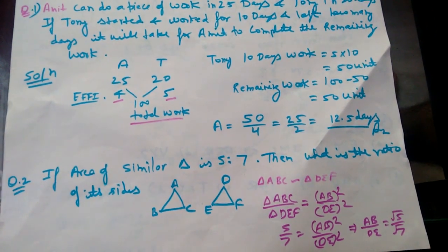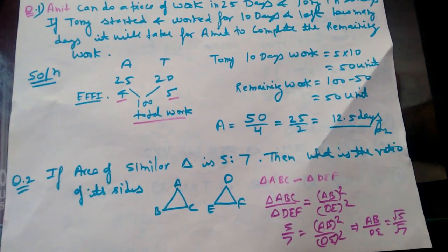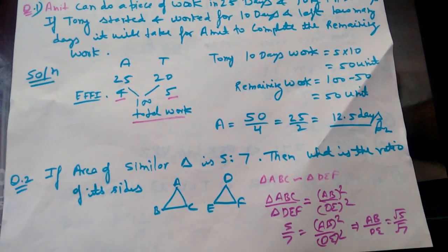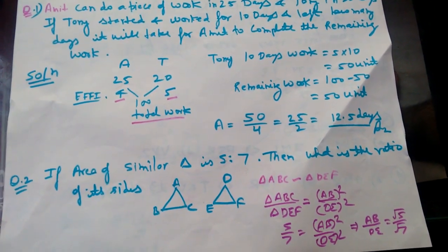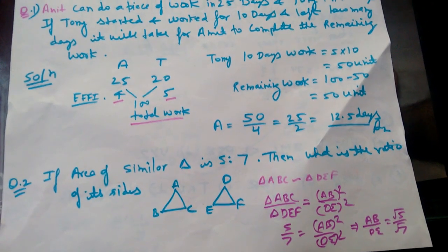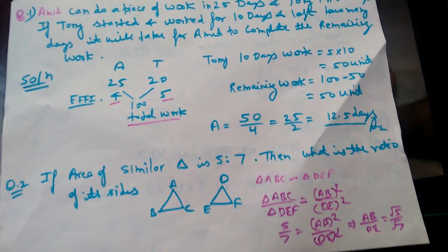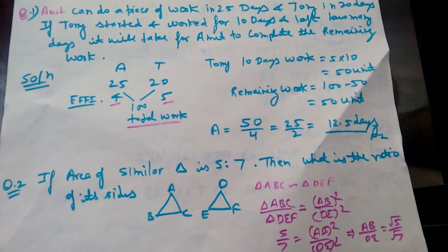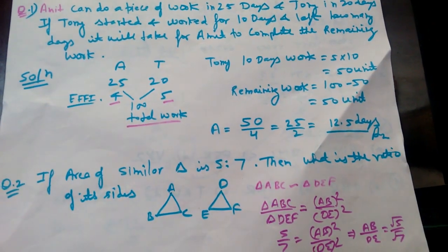how many days will it take for Amit to complete the remaining work? So Amit and Tony worked for 25 and 20, taking LCM. His efficiency was 4 for Amit and 5 for Tony. Our total work is 100. Tony's 10 days work is 5 into 10, which is 50 units.